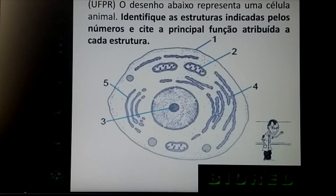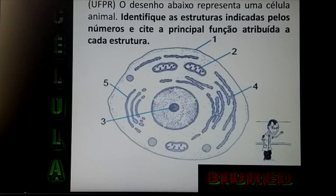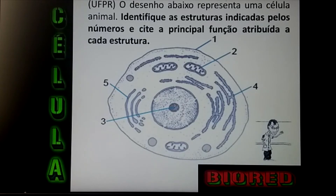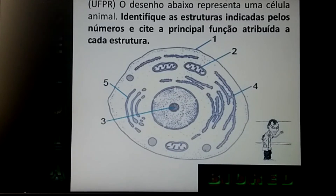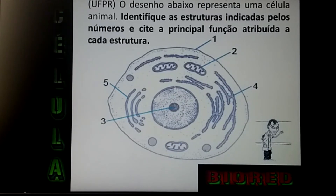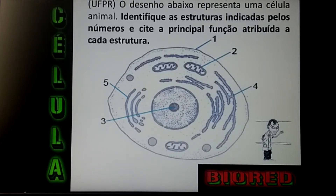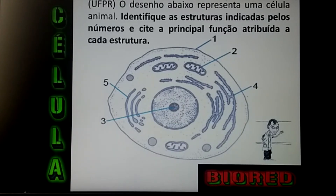O desenho abaixo apresenta uma célula animal. Indique as estruturas identificadas pelos números e cite a principal função atribuída a cada uma delas. Então vamos lá, que esse exercício é meio grande. O número 1 é a membrana plasmática, fica em volta da célula e a função é permeabilidade seletiva.